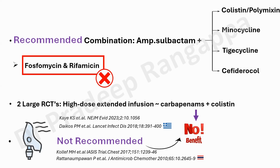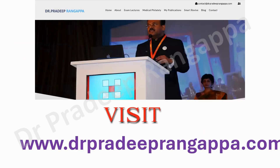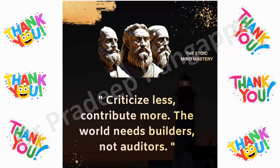The take-home message: if you have Acinetobacter VAP, UTI, or any Acinetobacter infection in the ICU, please use sulbactam in combination with those four drug options suggested by IDSA. The traditional carbapenem with colistin is de-emphasized — you cannot use that in isolation; sulbactam must be added. I will discuss all those studies in detail in a longer follow-up video. This is just a snippet — please submit valuable work to the Journal of Acute Care.